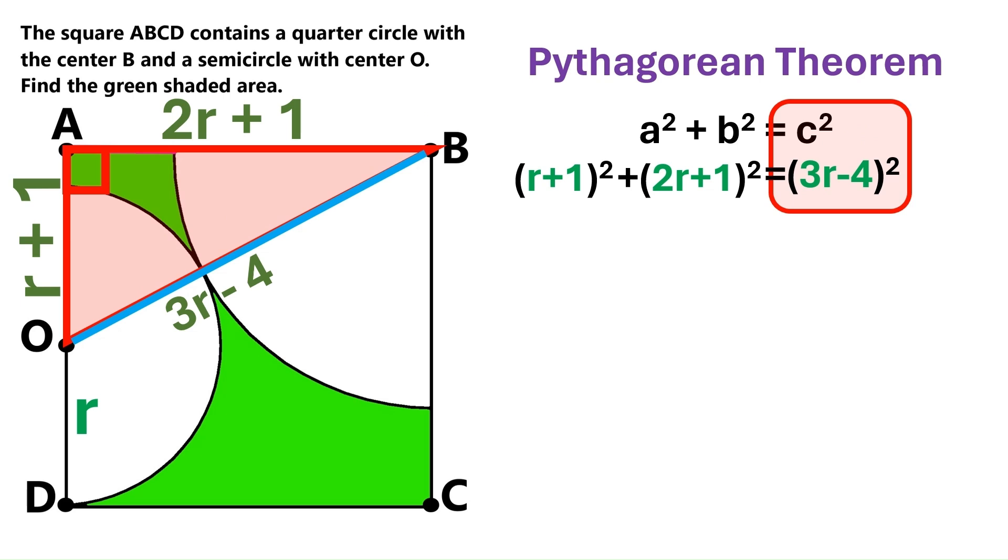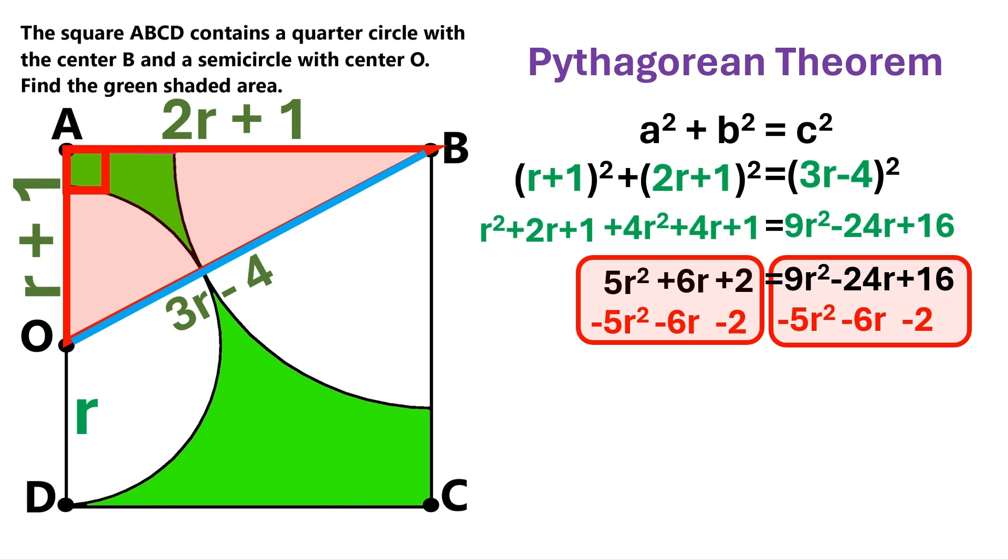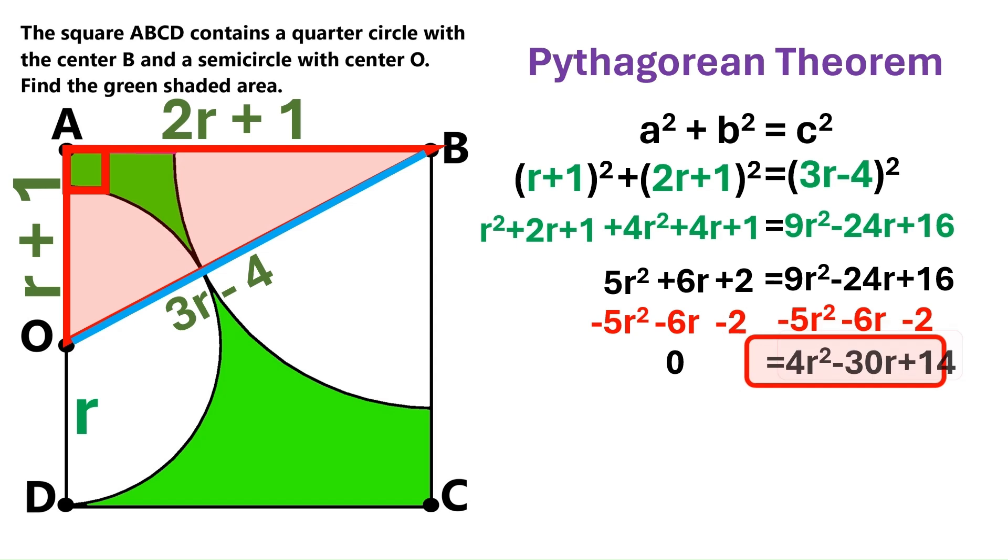And next we start opening up the brackets. This becomes r squared plus 2r plus 1. This becomes 4r squared plus 4r plus 1. And on the other side of the equation, we've got 9r squared minus 24r plus 16. Now it's time to add up the like terms on this side. r squared plus 4r squared is 5r squared. 2r plus 4r is 6r. And 1 plus 1 is 2. Next, we subtract this stuff from both sides to clear up the equation. The left hand side becomes a nice and clean zero. And on the right hand side, we get 4r squared minus 30r plus 14.